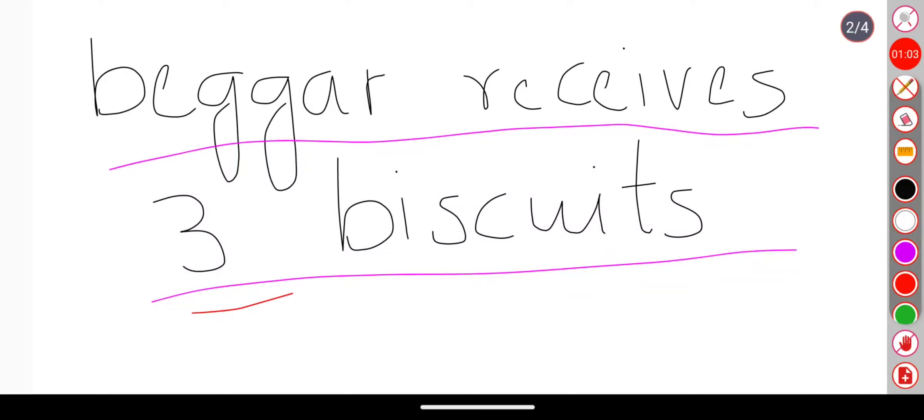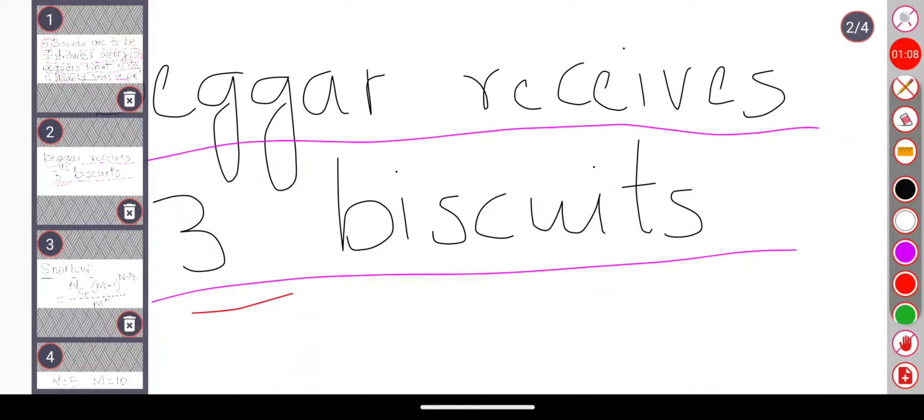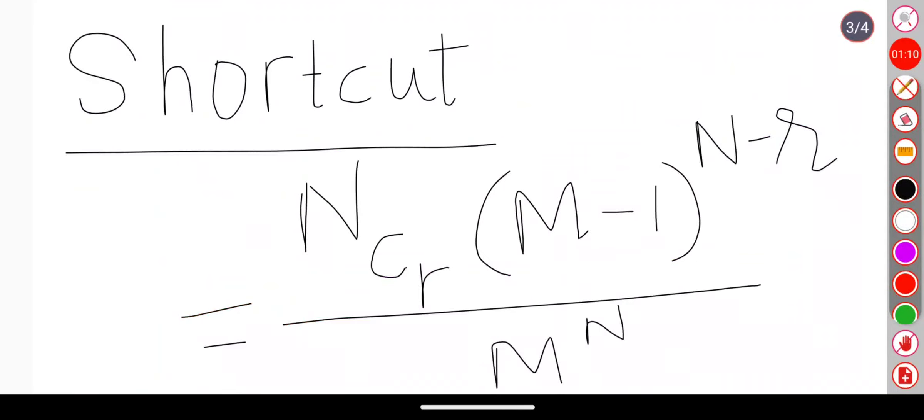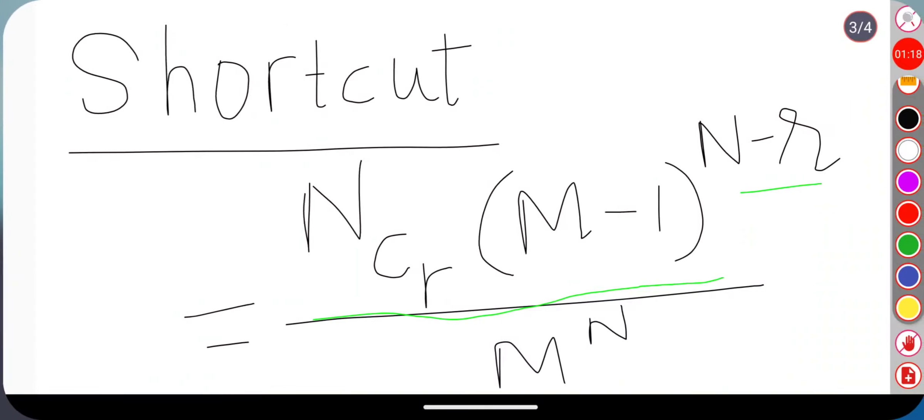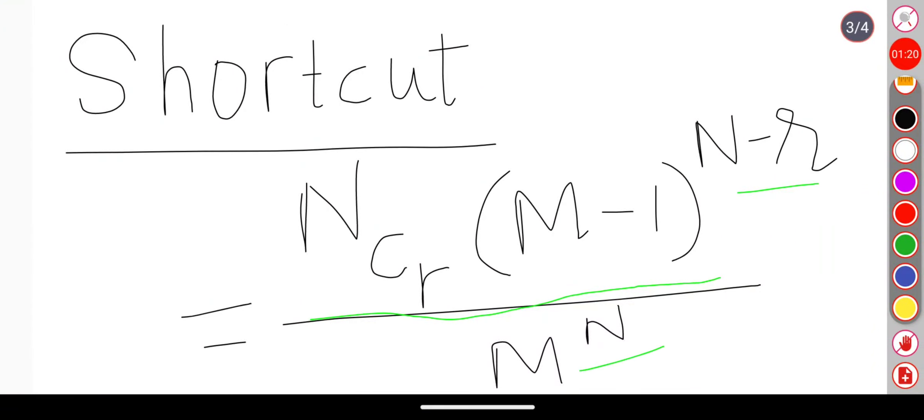Let's see the shortcut. The shortcut is NCR times (M-1) to the power of (N-R), whole to the power of M, divided by M to the power of N. Using this shortcut we can solve our problem in no time.